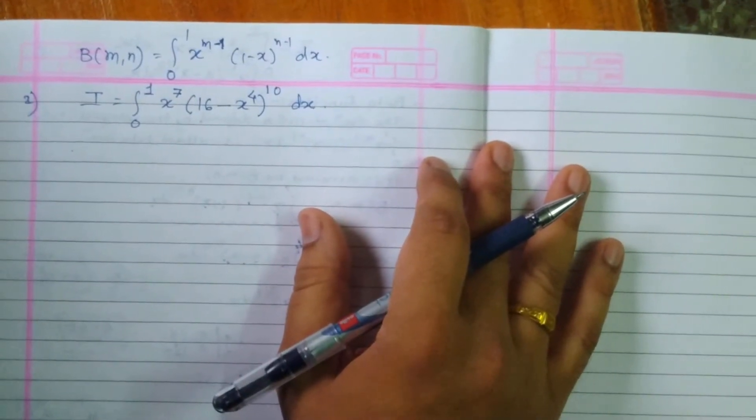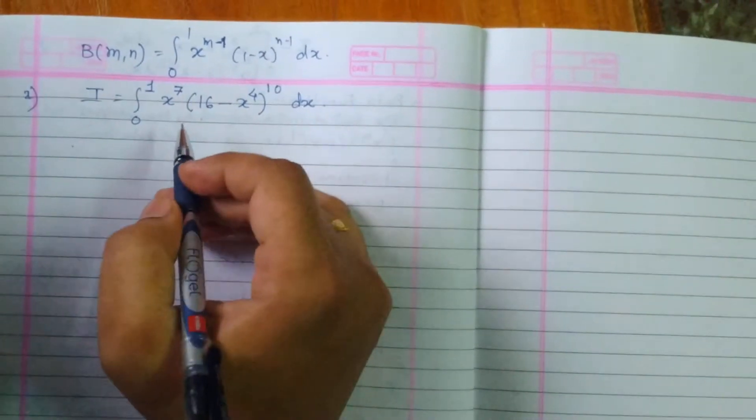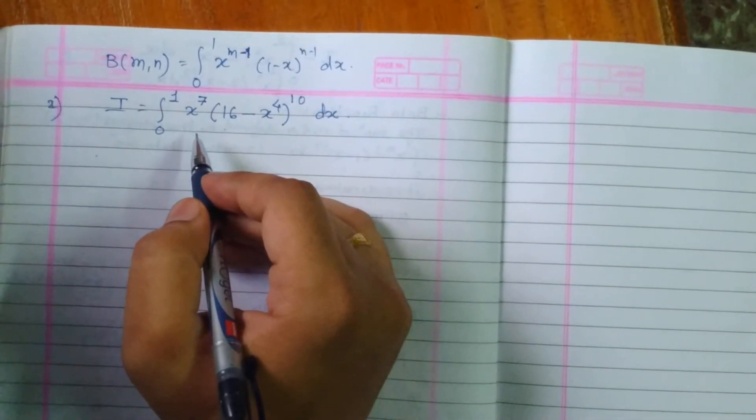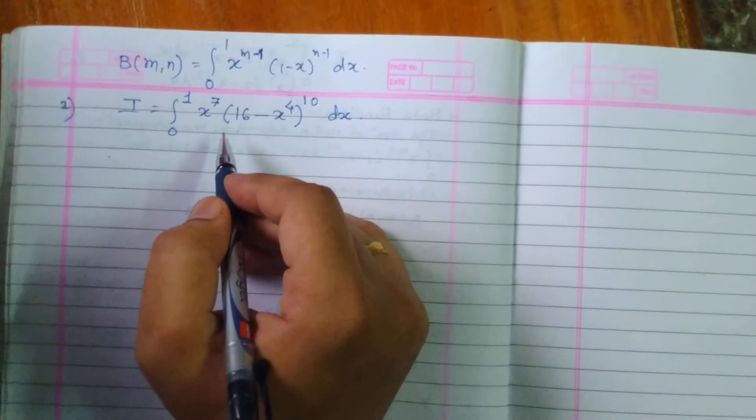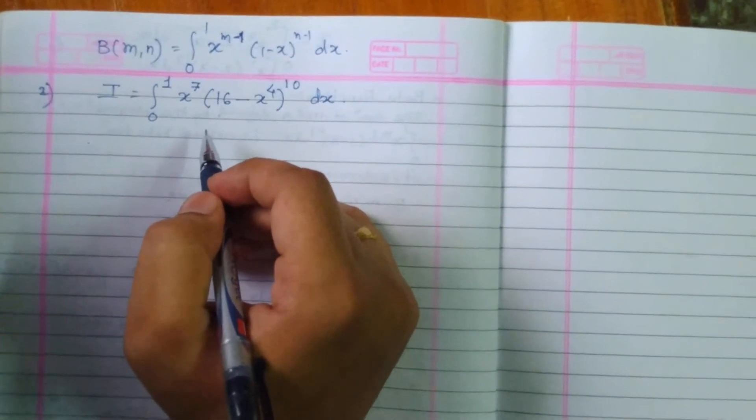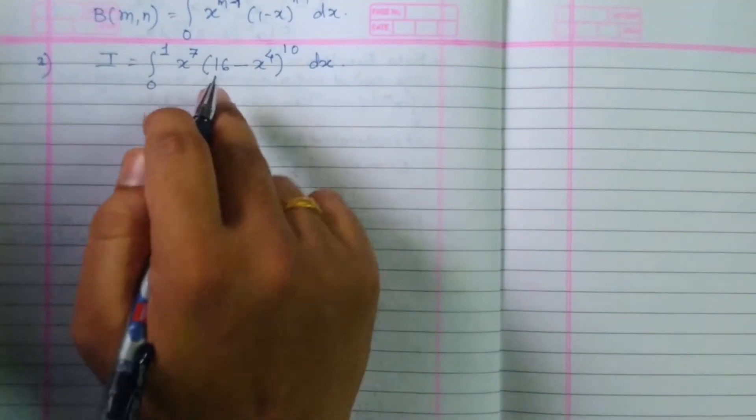Welcome to the second lecture on beta function. In the previous lecture you have seen the definition and one problem. I hope you have tried to solve the homework question. Let's come to this second example.